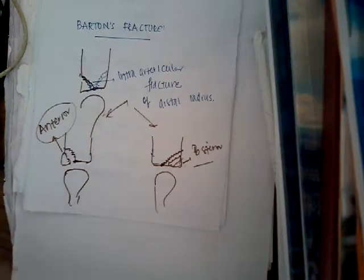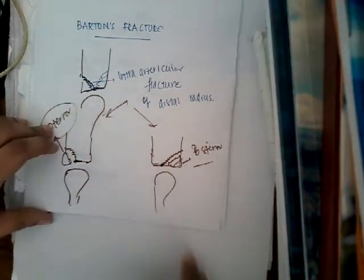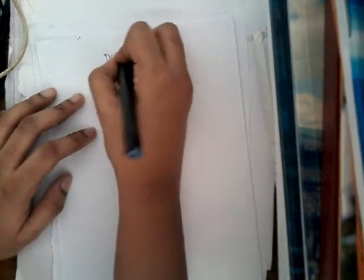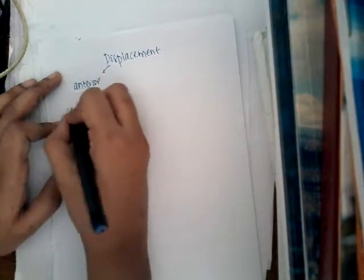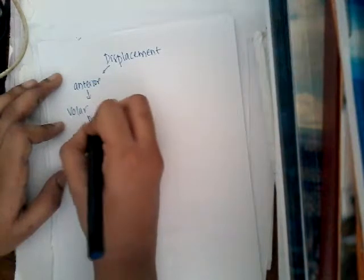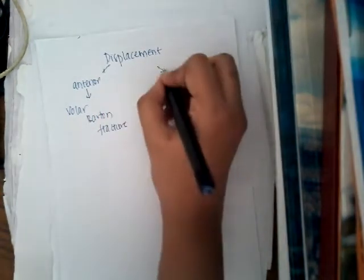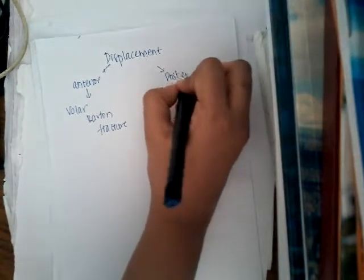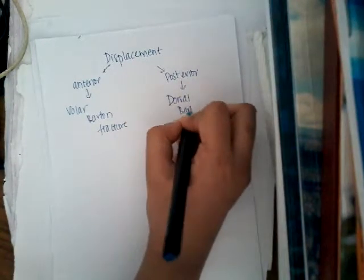Barton's fracture can also get displaced. If this Barton's fracture displaces anteriorly, then we call it a volar Barton's fracture. If it displaces posteriorly, we call it a dorsal Barton's fracture.